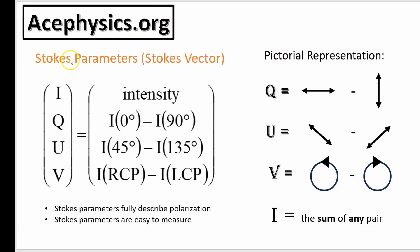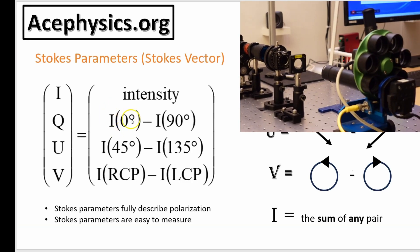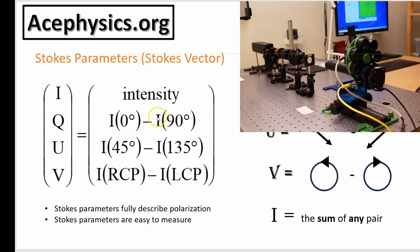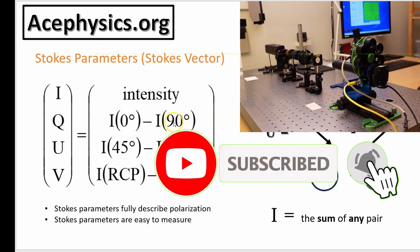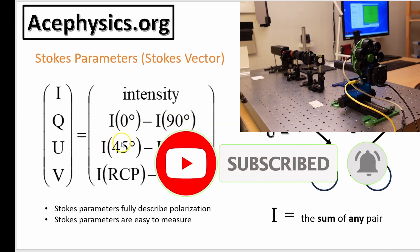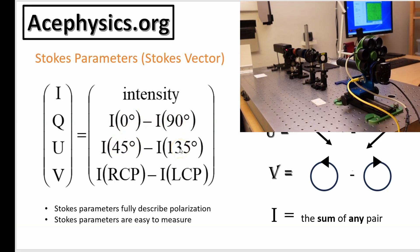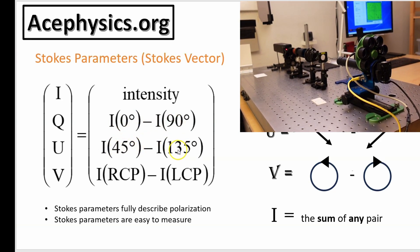Next we're going to talk about the Stokes parameters, which are the parameters that describe and define polarized light. What's great about them is that they are connected to the measurement of the polarization itself. I of zero degrees should be read as the intensity measured through a polarizing filter at zero degrees — it takes out everything except the horizontally polarized component. You also take a measurement at 90 degrees, and at 45 and 135 degrees, which are diagonal and anti-diagonal respectively.